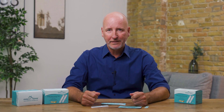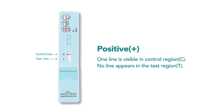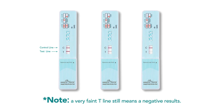Before we dive in, let's clarify the basics. A negative result will show both the test (T) and control (C) lines, while a positive result will show only the control (C) line. But sometimes a faint line might appear in the negative result. Let's explore why this happens.